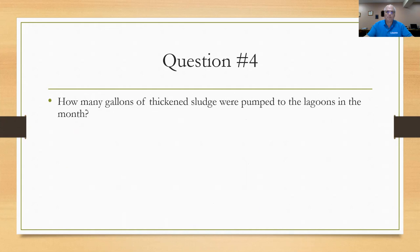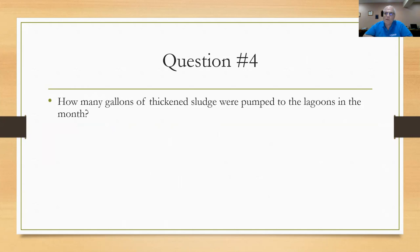Question number four asks: how many gallons of thickened sludge were pumped to the lagoons in the month? From the tables, the plant produces sludge from the sedimentation basins going to a thickener. The thickener adds polymer, lets solids settle, decants the supernate for NPDES permit discharge, and pumps the thickened sludge to the lagoon. This sends only thickened solids to the lagoon, reducing the amount that must go to the landfill.